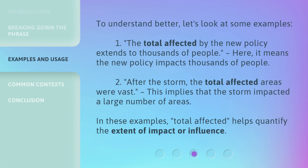To understand better, let's look at some examples. First: The total affected by the new policy extends to thousands of people — meaning the new policy impacts thousands of people. Second: After the storm, the total affected areas were vast — implying that the storm impacted a large number of areas. In these examples, Total Affected helps quantify the extent of impact or influence.